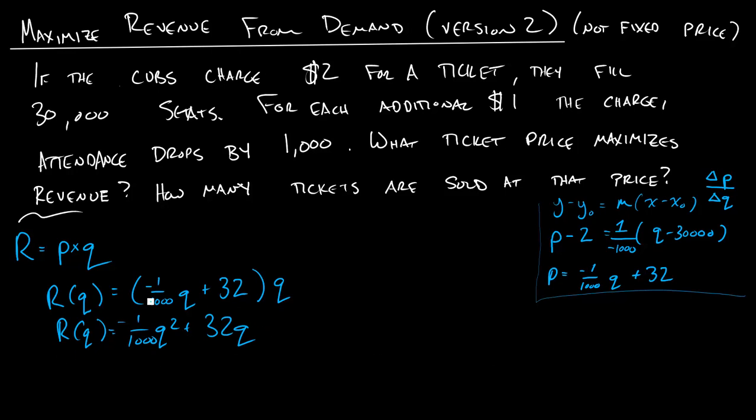And to maximize this function, you would take the derivative and set it equal to 0. So R prime of Q would be equal to negative 2 over 1,000 Q plus 32.